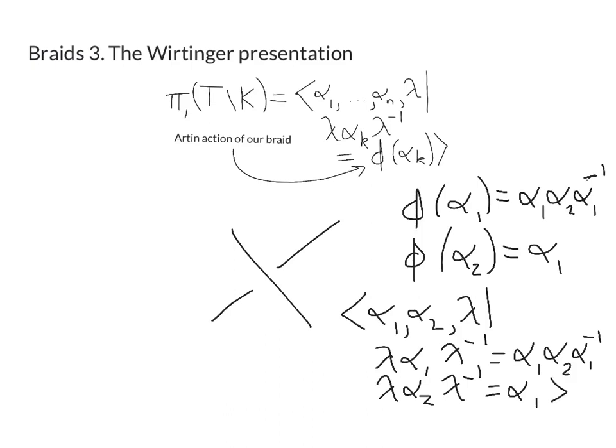What is the knot that we get? Well, if we close this off you can see we're getting the unknot, but it's an unknot that sits in a solid torus in a slightly non-trivial way, and that's why we get this slightly complicated fundamental group over here.